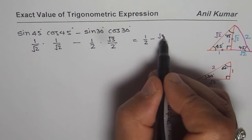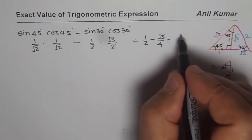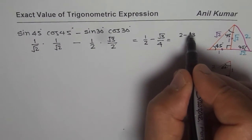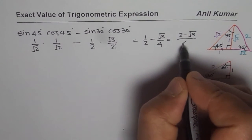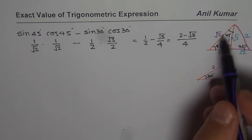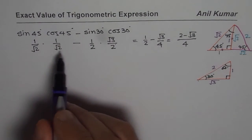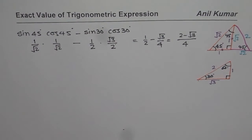Multiplying sine 45 by cosine 45 gives 1 over 2. Multiplying sine 30 by cosine 30 gives square root 3 over 4. Using a common denominator of 4, the numerator becomes 2 minus square root 3, and the denominator is 4. So the exact value is (2 minus square root 3) over 4.